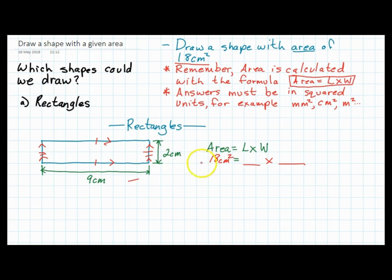Okay, so just 2 times 9 and that will give you 18 centimeters squared. Okay, they match so they're correct, and that is how you can work out the area of a shape.